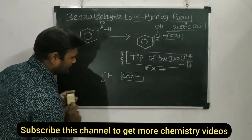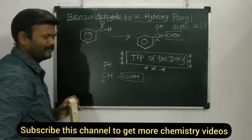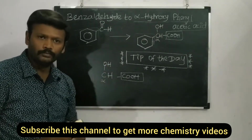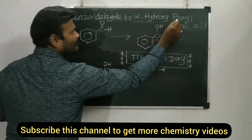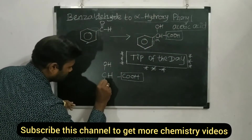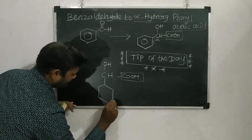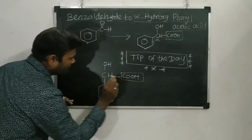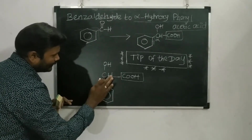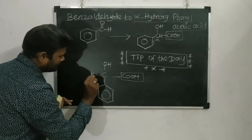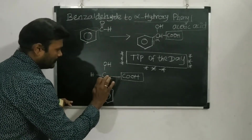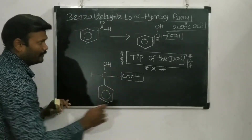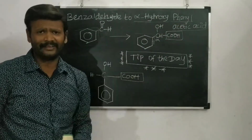They specify alpha hydroxy, so at the alpha position, instead of one hydrogen I write a hydroxyl (OH) group. They also specify phenyl, so I attach a phenyl group at that same alpha carbon. Now checking carbon valence: at the alpha carbon there is one H, one OH, one COOH, and one phenyl group — that gives us alpha hydroxy phenyl acetic acid.